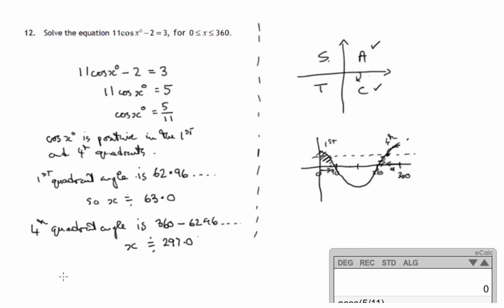So there's two possibilities. So x is approximately equal to 63.0 or 297.0, both to one decimal place.